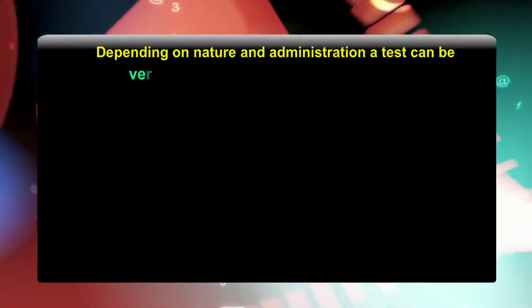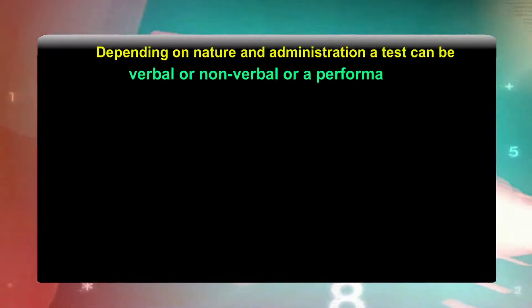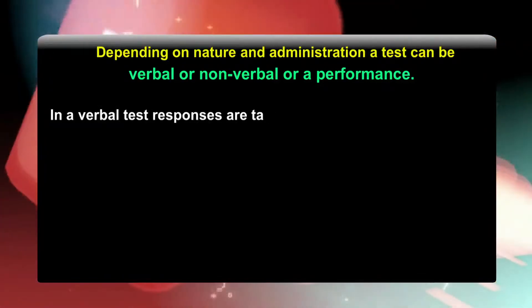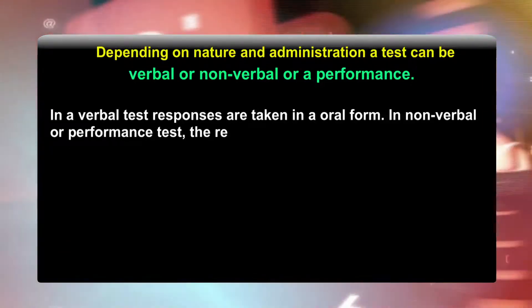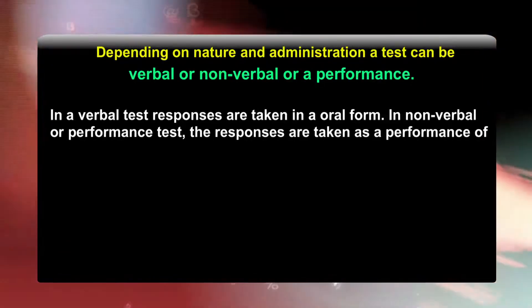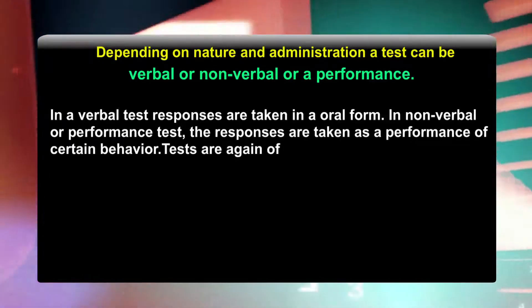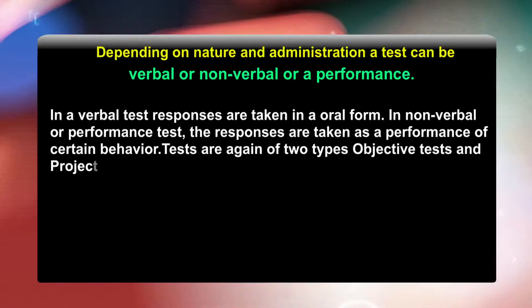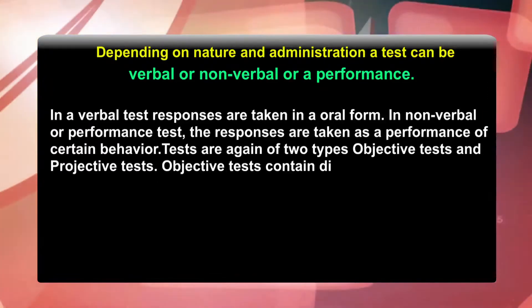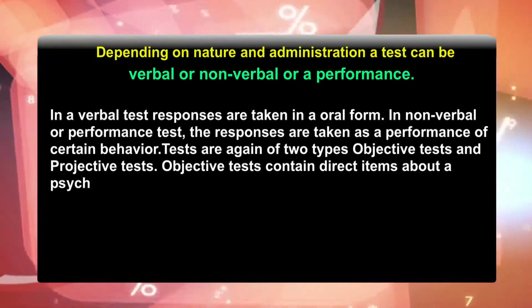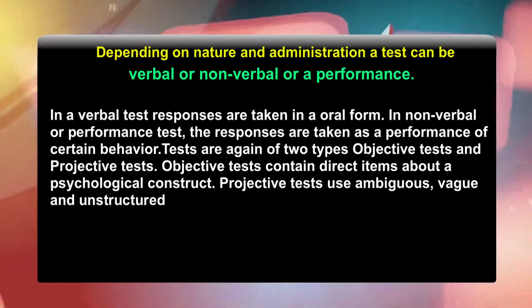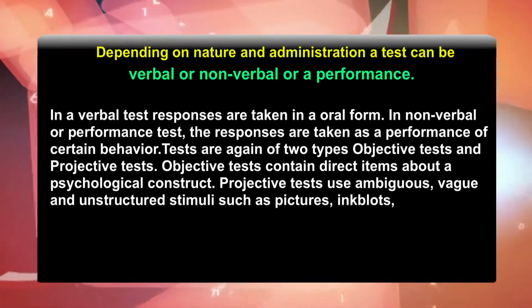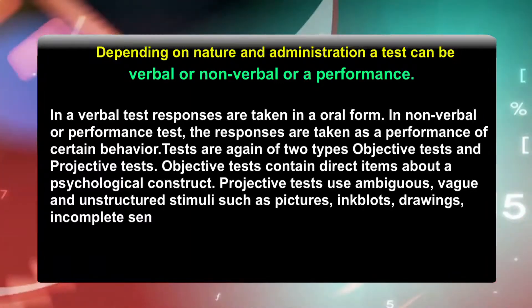Depending on nature and administration, a test can be verbal, non-verbal or a performance test. In a verbal test, responses are taken in an oral form. In non-verbal or performance tests, responses are taken as a performance of certain behavior. Tests are again of two types: objective tests and projective tests. Objective tests contain direct items about a psychological construct. Projective tests use ambiguous, vague and unstructured stimuli such as pictures, inkblots, drawings and incomplete sentences.